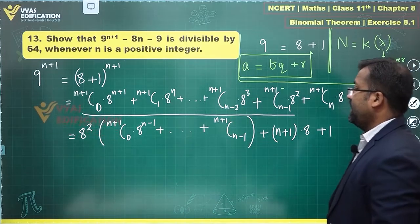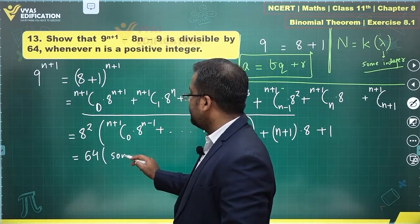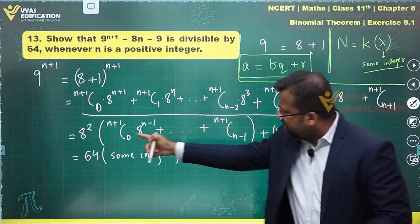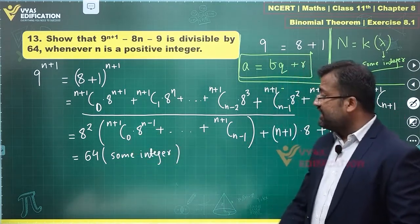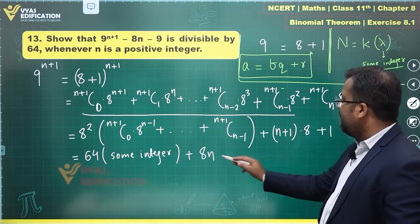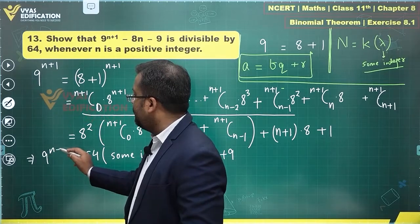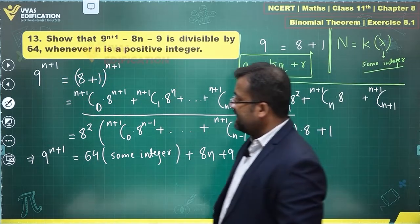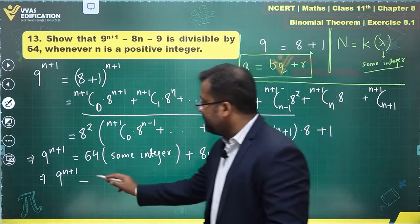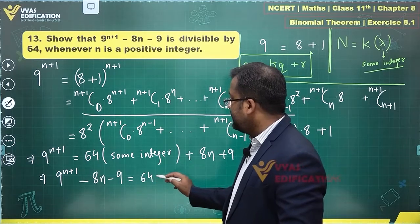Taking 8² common from all terms from 8² and higher gives: 64 times [(n+1)C0 · 8^(n-1) + ... + (n+1)C(n-1)], which is all integers. So the expansion equals 64 times some integer, plus (n+1)·8 + 1. Simplifying: 8(n+1) + 1 = 8n + 8 + 1 = 8n + 9. Taking that to the left-hand side, this becomes 9^(n+1) minus 8n minus 9 equals 64 times some integer.